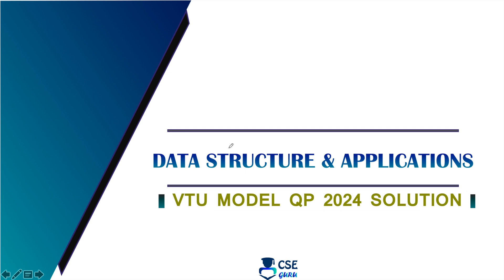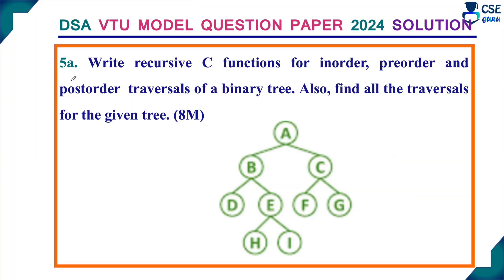Welcome to CSA Guru. In this session, we will discuss the VTU Model Question Paper 2024 Solution for Infrastructure and Applications. Question number 5A: Write recursive C functions for in-order, pre-order and post-order traversal of a binary tree.